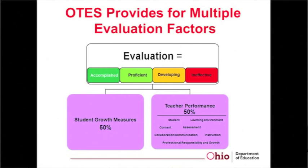The ORC requires that teacher evaluation be split into two parts. Fifty percent of the evaluation must be based on Student Growth Measures, and we're going to talk about all of the different categories for Student Growth Measures. The other fifty percent is based on those seven teaching standards. Many of you have probably been through the three-day OTES training and have been trained or credentialed as an OTES evaluator. So fifty percent is on those observations and walk-throughs, and the other fifty percent is on Student Growth Measures.